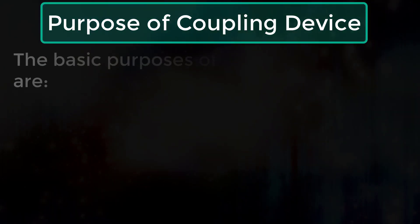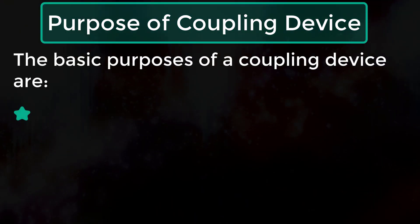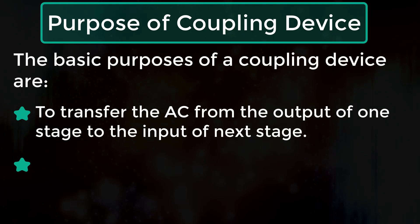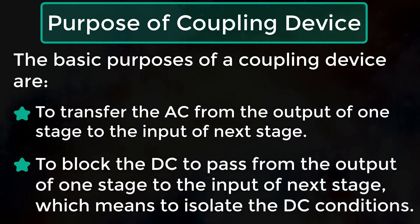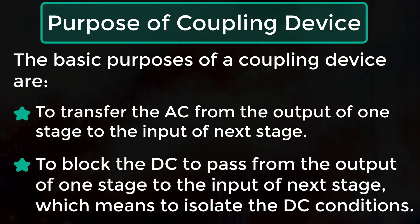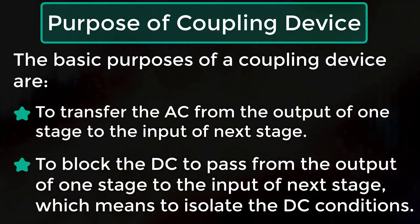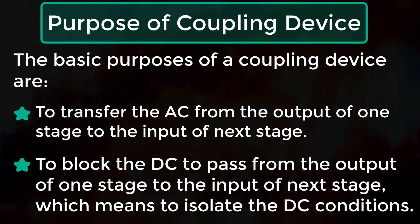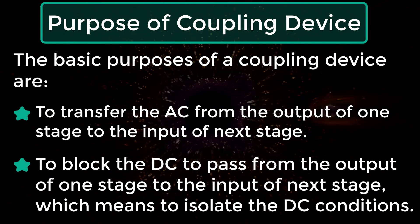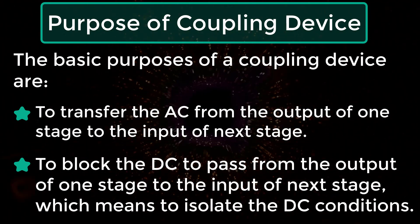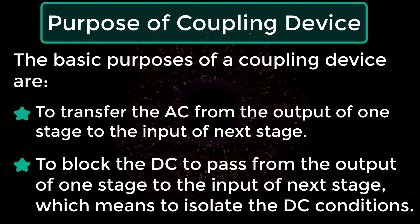Purpose of coupling devices: The basic purpose of coupling devices is to transfer the AC signal from the output of one stage to the input of the next stage, and to block DC from passing between stages — that is, to isolate the DC conditions.